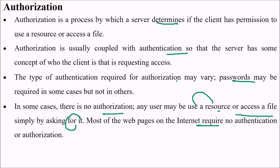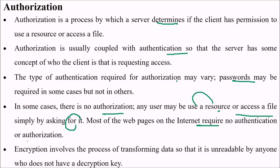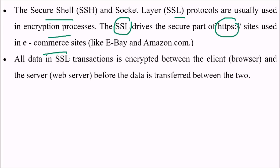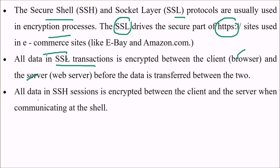Most web pages on the internet require authentication and authorization. Encryption involves the process of transforming data so that it is unreadable by anyone who does not have a decryption key. Protocols like SSH (Secure Shell) and SSL (Secure Sockets Layer) are usually used for this encryption process, and SSL drives the secure part of HTTPS sites used in e-commerce and various other sites.